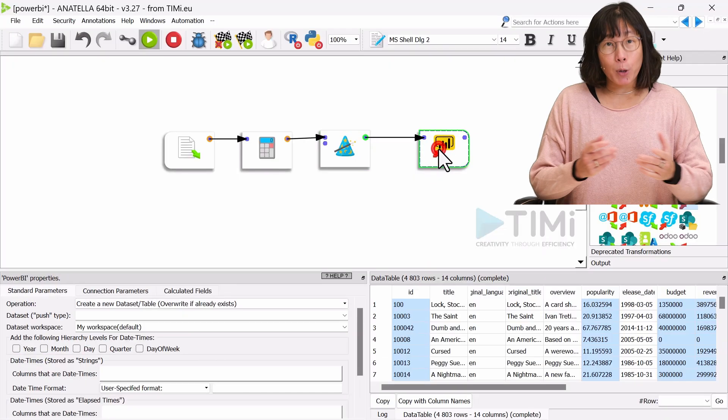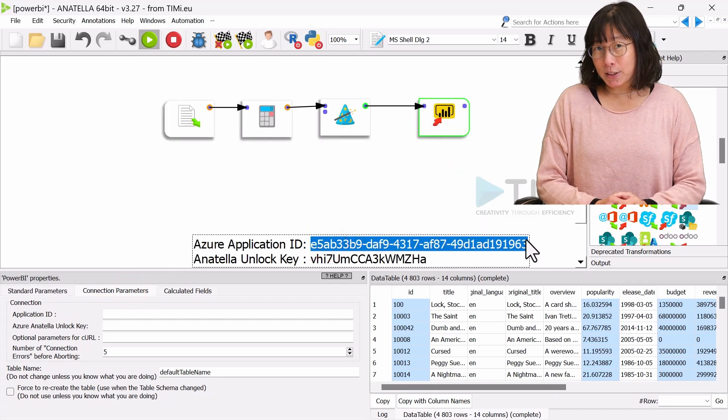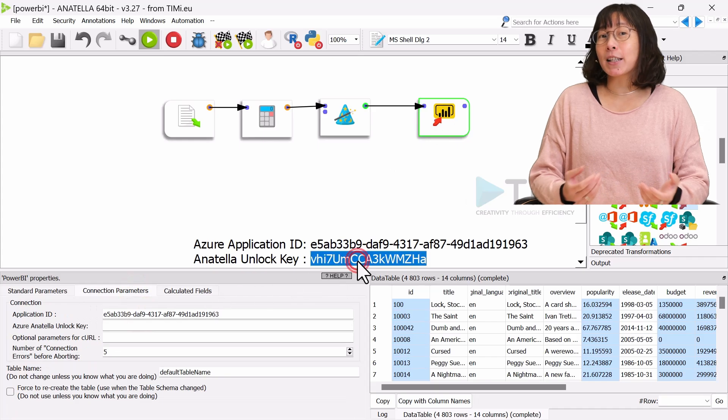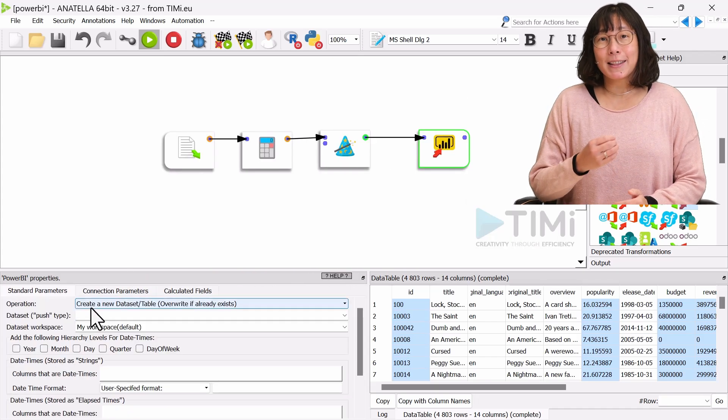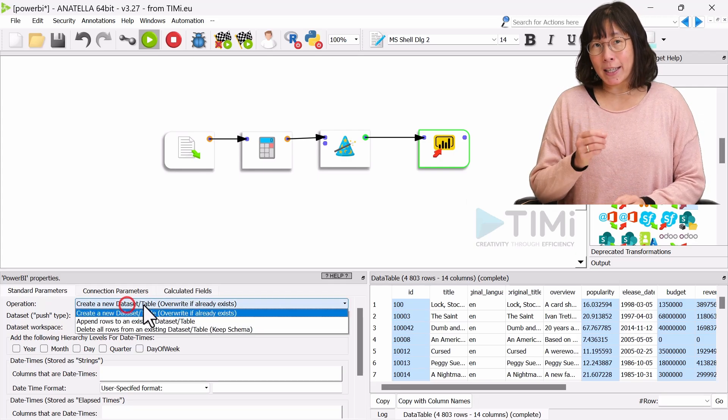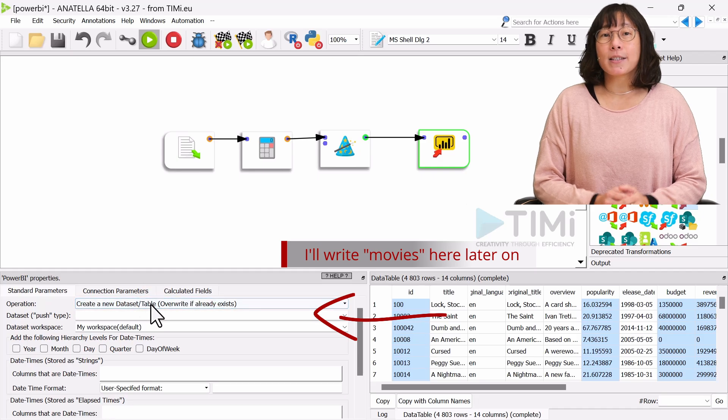Let's put the Power BI box on the canvas. In the connection parameter tab, input the Azure application ID and the Anatella unlock key. In the standard parameter tab, ensure that the operation is set to create a new dataset and name the dataset as movies.